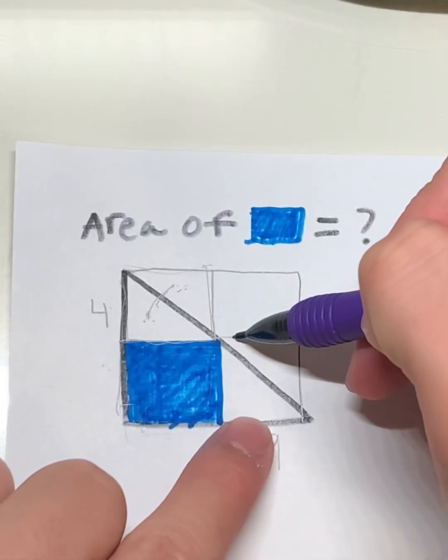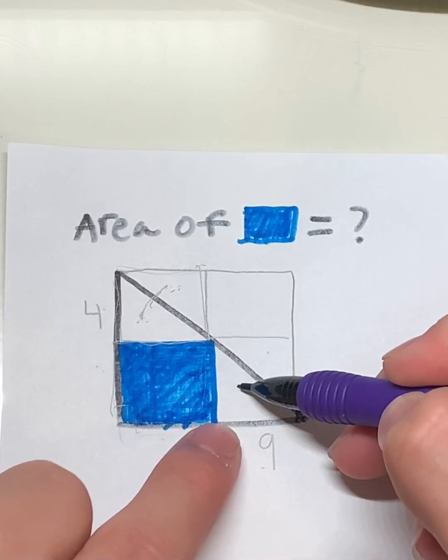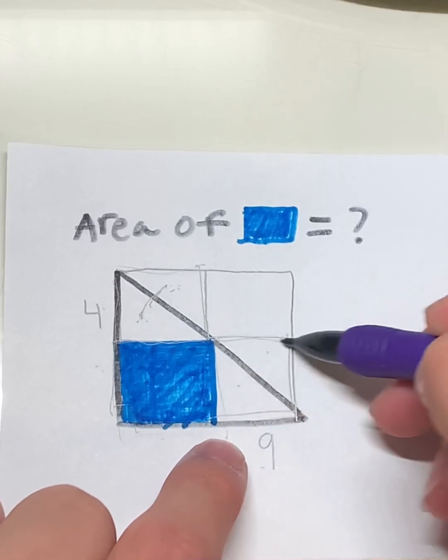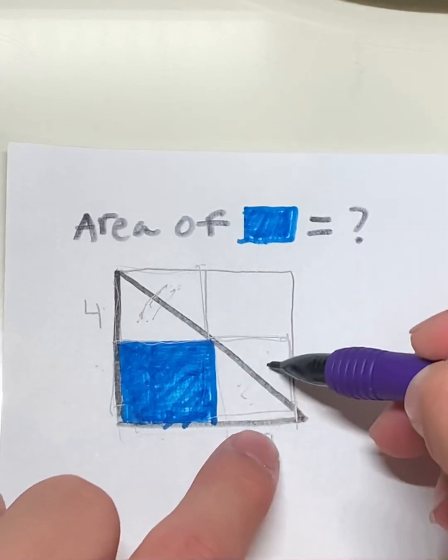And let's make a triangle over here. So this triangle is the same as this triangle. Same width, same length. So these two triangles are congruent to each other.